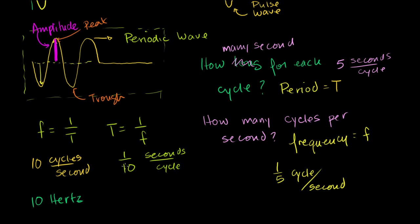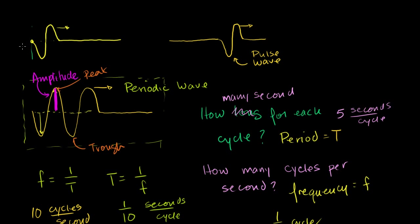Another question we might ask is how quickly is this wave moving — in this case to the right? To find the velocity, we need to figure out how far the wave went after one cycle, or after one period. So after I jiggle this once, how far did the wave go? That distance from this resting point to this resting point — we call that a wavelength. You can define a wavelength as how far the initial pulse went after completing exactly one cycle, or as the distance from one peak to another peak, or from one trough to the other trough.